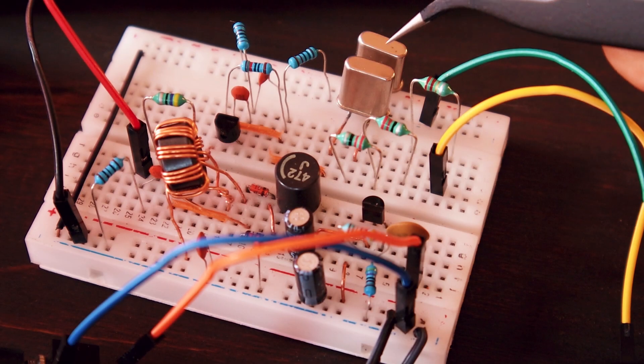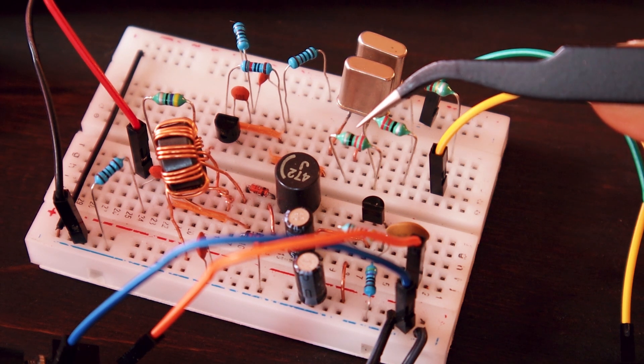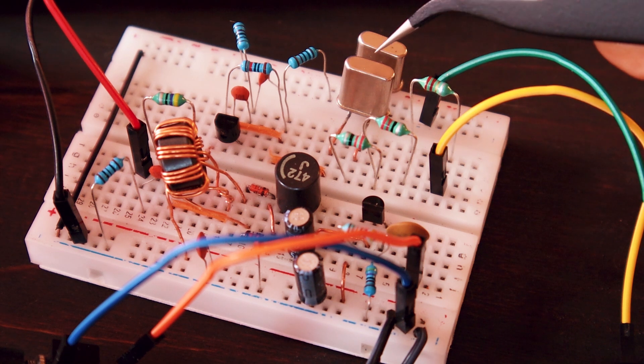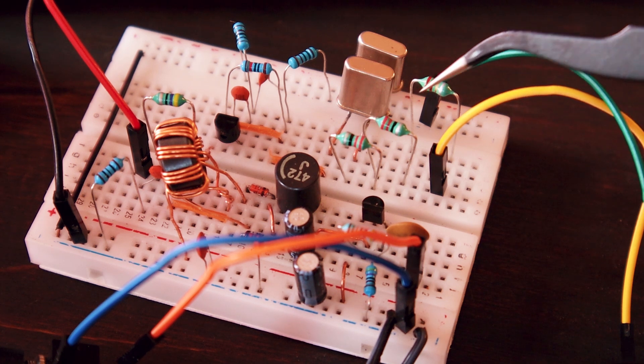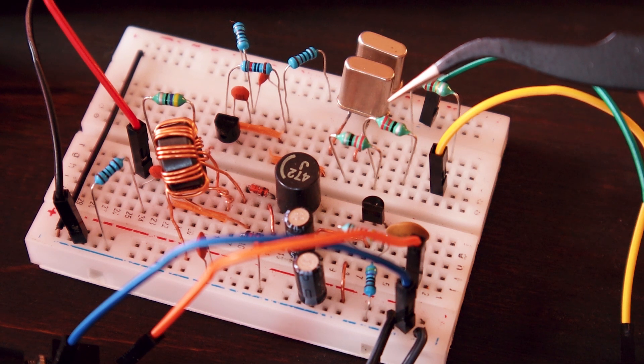So instead of one crystal I use two crystals. They are 7.040 megahertz each. And instead of using one single 22 microhenry inductor, I used - these two crystals are in parallel by the way - these three inductors are all in series, replacing the 22 microhenry inductor.